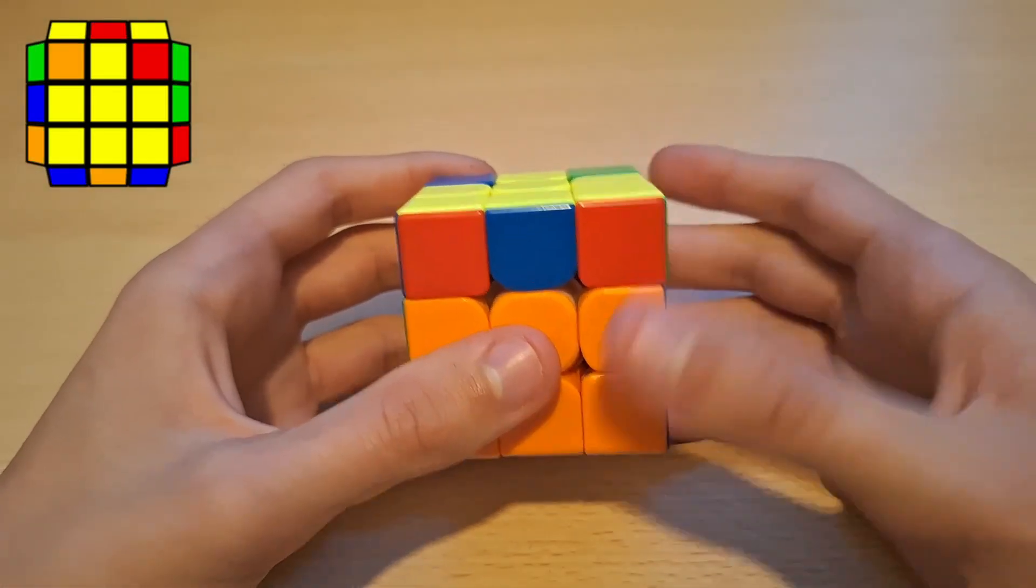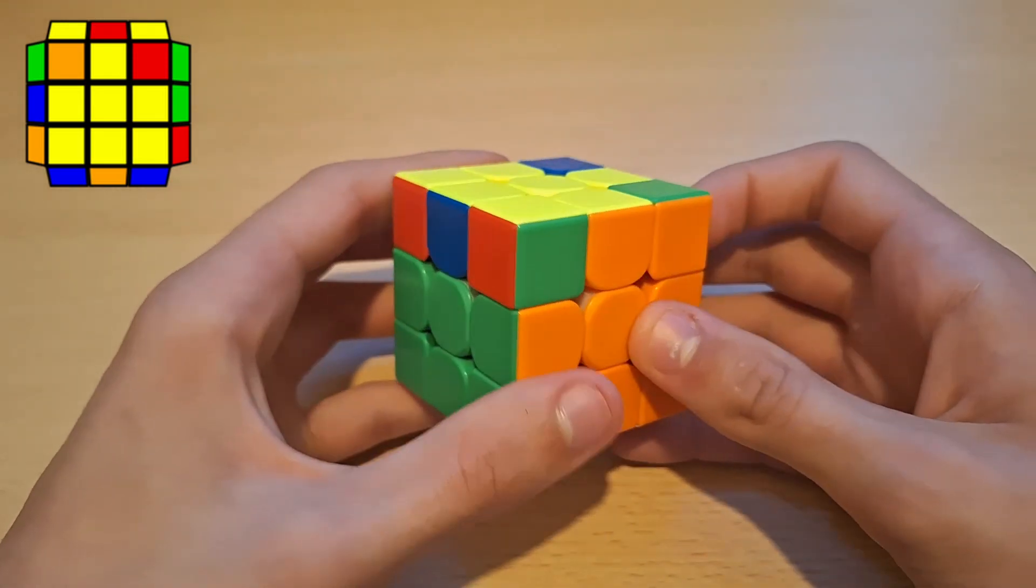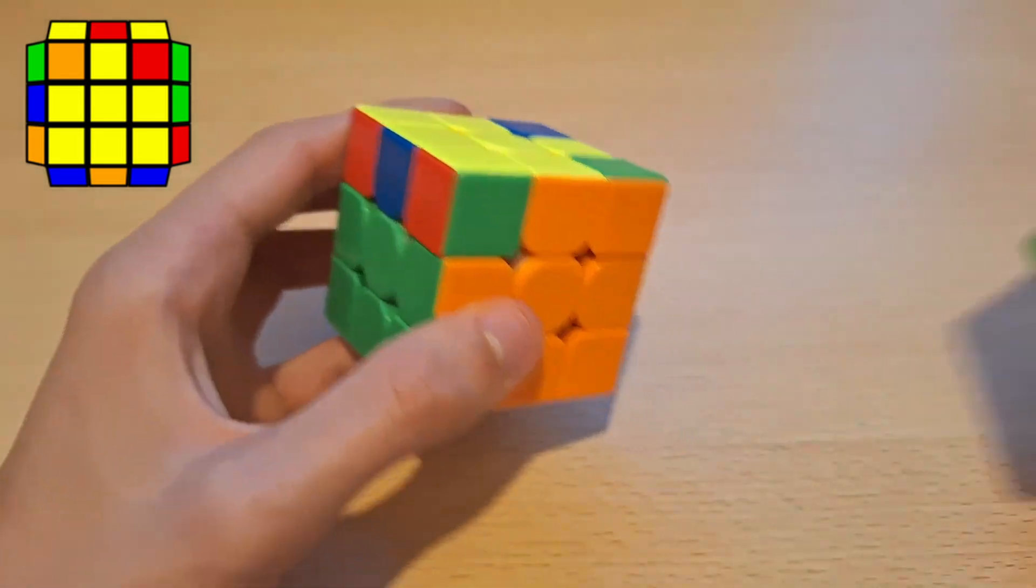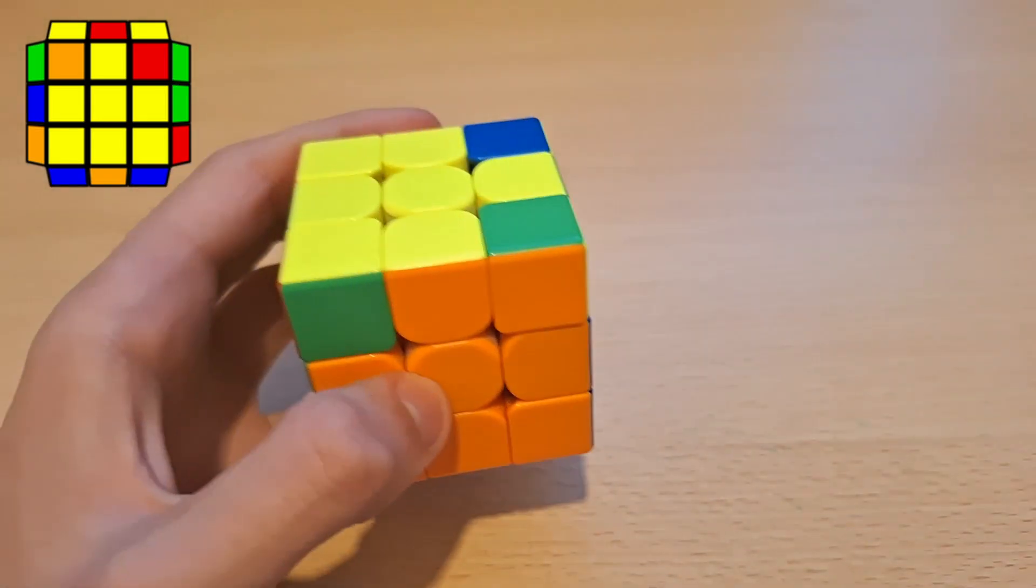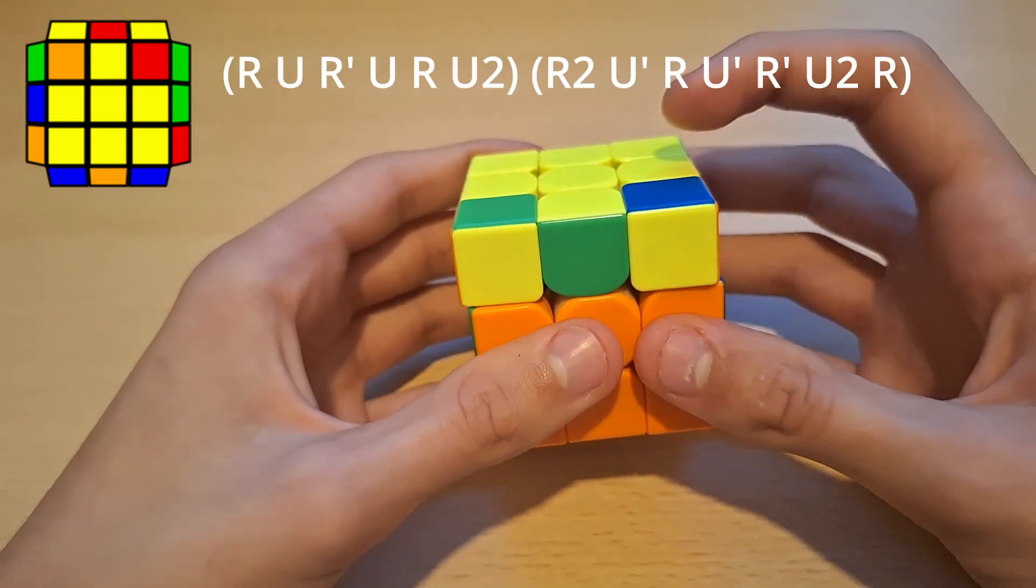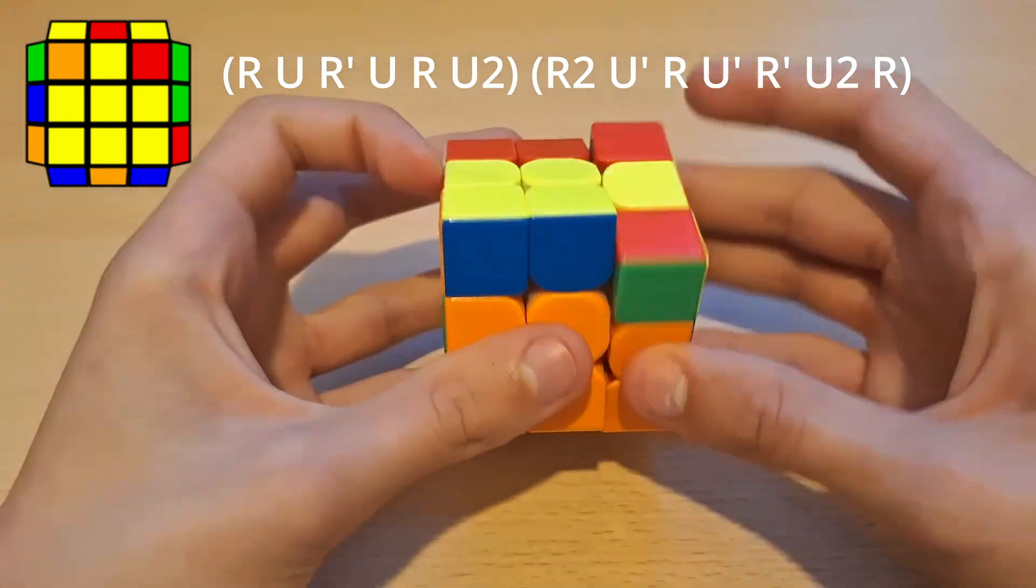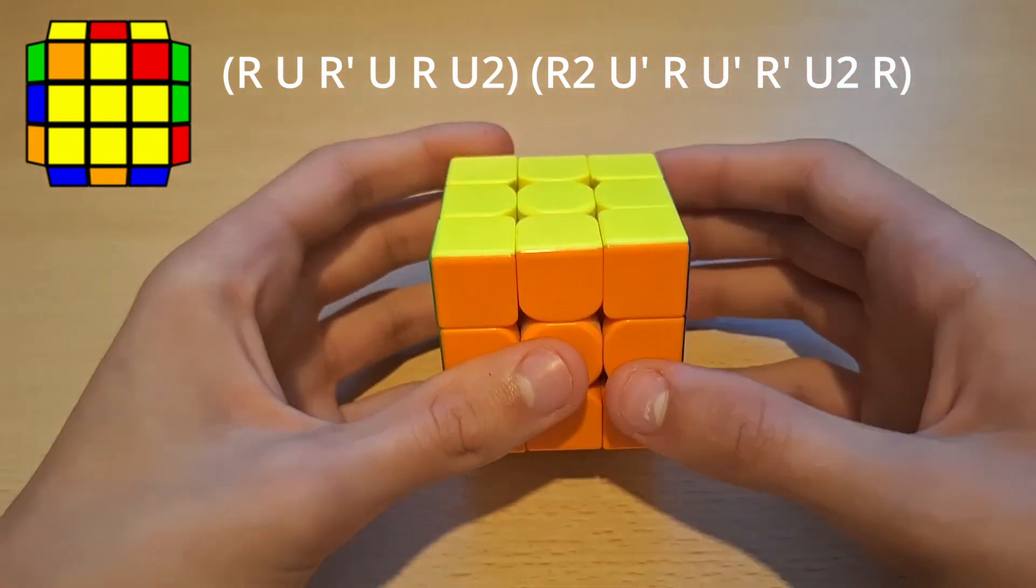So for the next ZBLL how I recognize this is if you look from this angle it's pretty much a GA-perm, so as you can see here. And for this ZBLL from this angle what you do is just righty sune and then cancel into back sune. So like that.